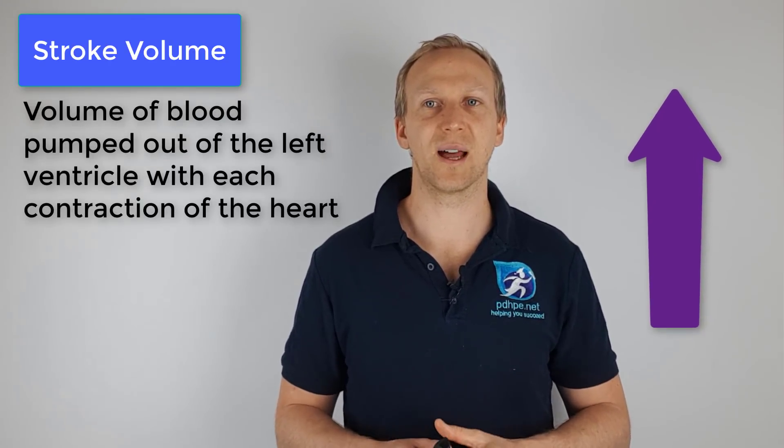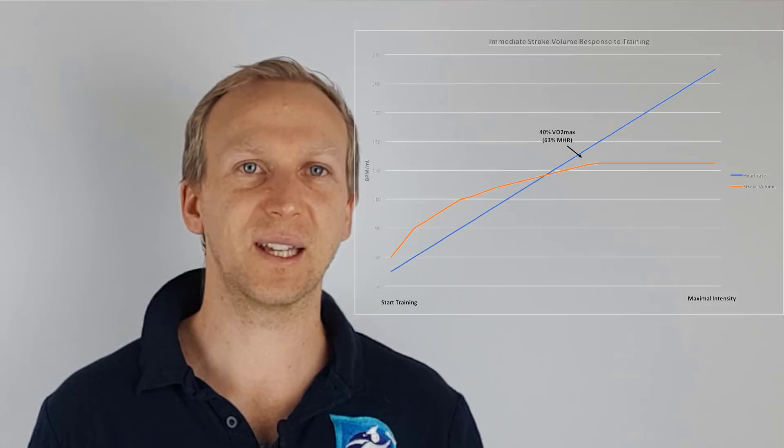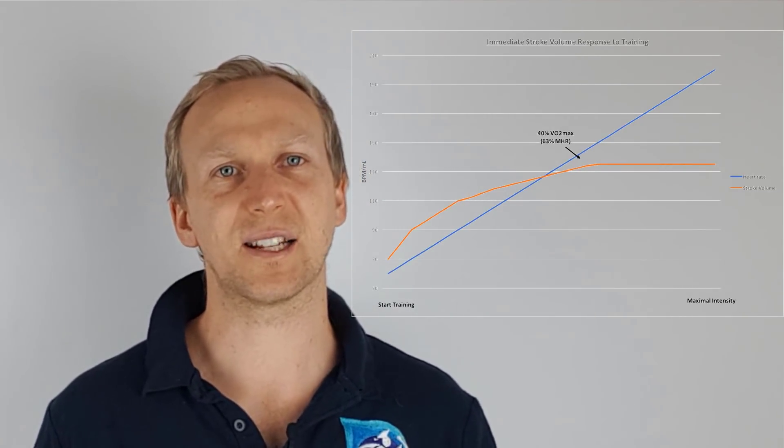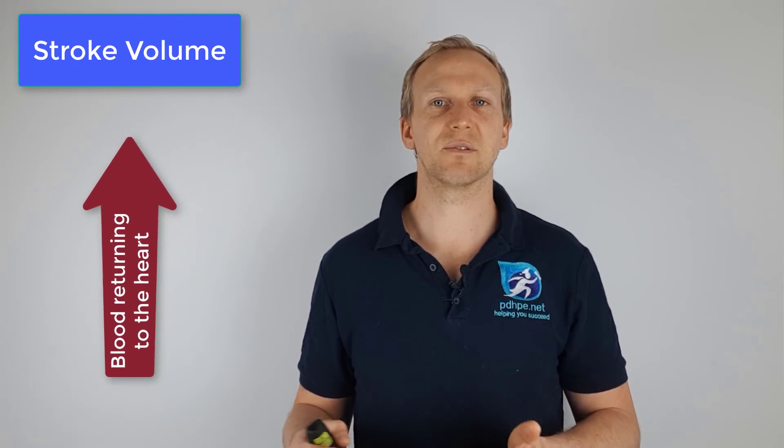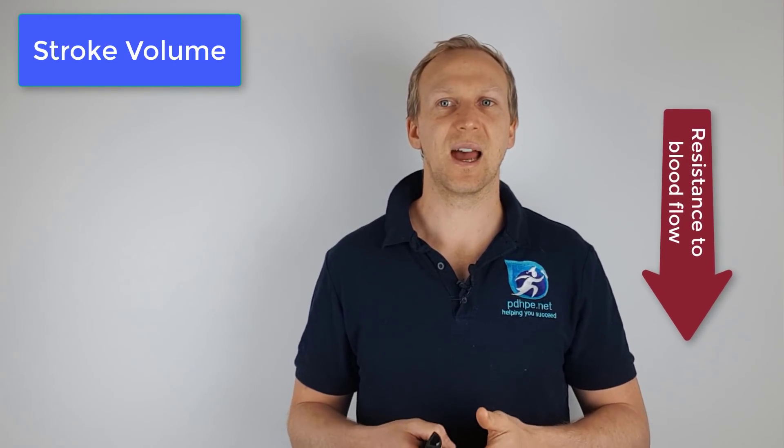During exercise, stroke volume will also increase. Stroke volume is the volume of blood pumped out of the left ventricle with each contraction. It increases quite early in exercise but then plateaus at around 65% of maximum heart rate intensity. This is due to increased blood returning to the heart from muscular contractions, resulting in greater diastolic filling, which increases stroke volume. The body also has a high demand for oxygen, so the heart contracts more forcefully, and there is less resistance to blood moving out of the ventricle due to vasodilation — the widening of blood vessels.